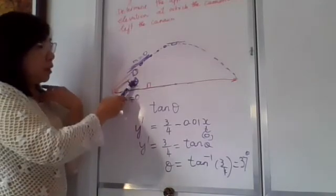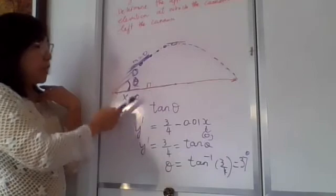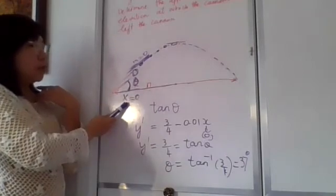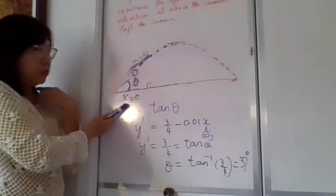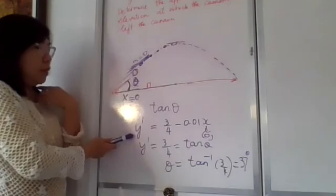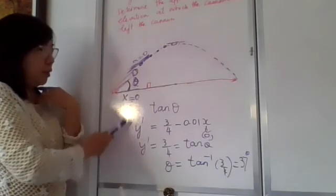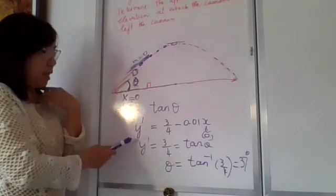So we know that when it just fires, the bullet just left, its horizontal distance is zero. And we take the derivative, which is to find the slope, right? The tangent slope, tan theta.